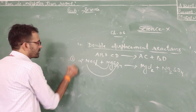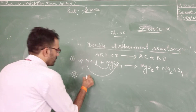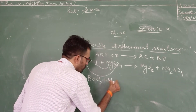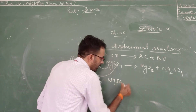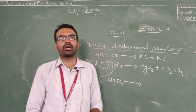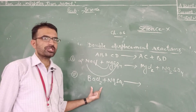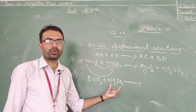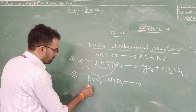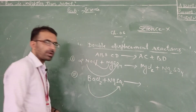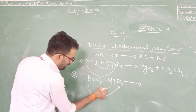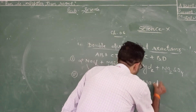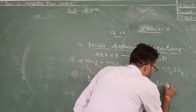We can take one more important example: BaCl2 plus Na2SO4. BaCl2 is known as barium chloride while Na2SO4 is known as sodium sulphate. In this case, Ba combines with SO4 while Na combines with Cl, and the compounds formed are NaCl plus BaSO4.